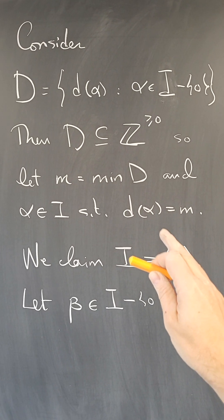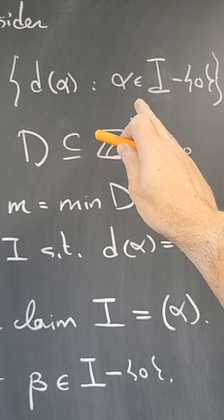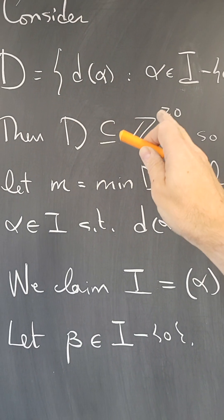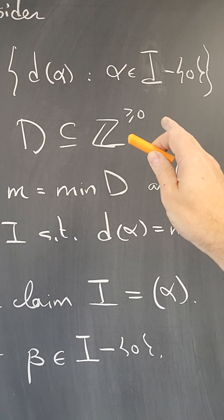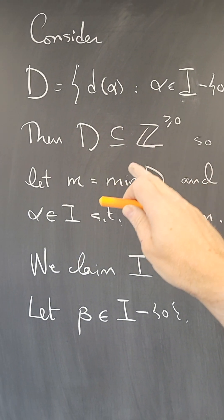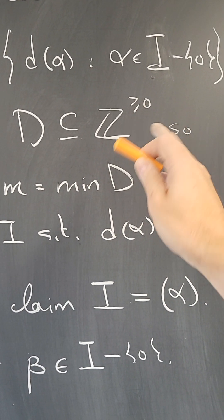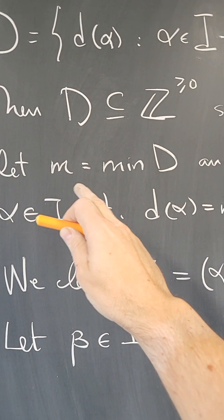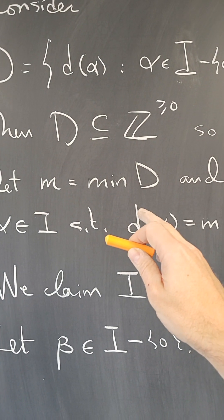Now what we're going to do is form a set of all the D values of elements of the ideal that are non-zero. And this set, because the ideal is not the zero ideal, there is something else in that ideal, so it's non-empty. So D is a non-empty subset of non-negative integers, and therefore there is a minimum value. Let M be the minimum value of the D values of alphas in I.